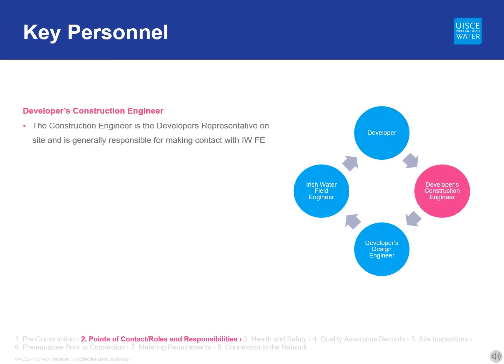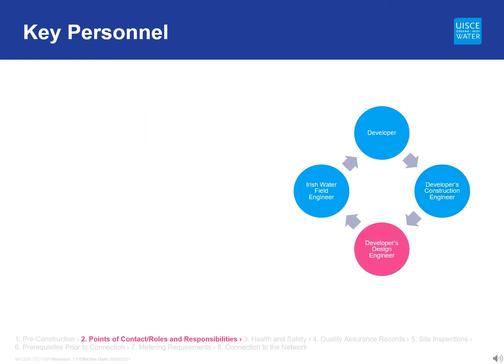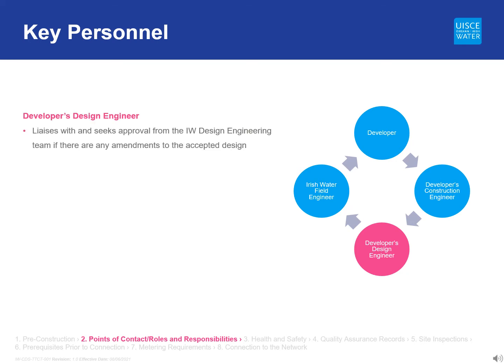The construction engineer is the developer's representative on site, generally responsible for making contact with the field engineer. The construction engineer should also request the attendance of the field engineer for inspections, ensure that all personnel on site cooperate with the field engineer, ensure compliance with the Irish Water codes of practice and standard details, prepare an inspection and test plan in line with Irish Water's requirements, forward the inspection and test plan to the field engineer for review, and maintain the site as-built and quality assurance records. The nominated design engineer is responsible for liaising with the Irish Water design engineering team in case there needs to be any revisions made to the accepted design before or during construction, and is the point of contact for any design queries from the construction engineer.